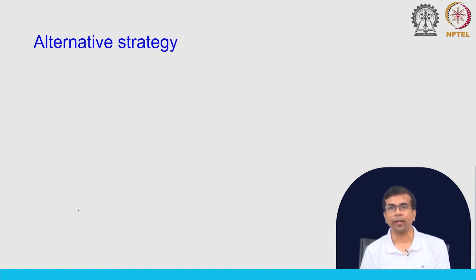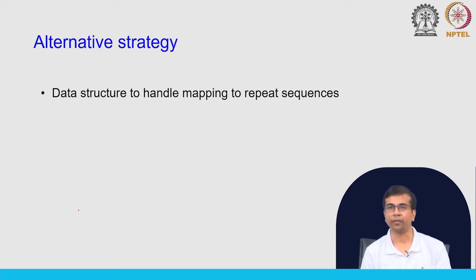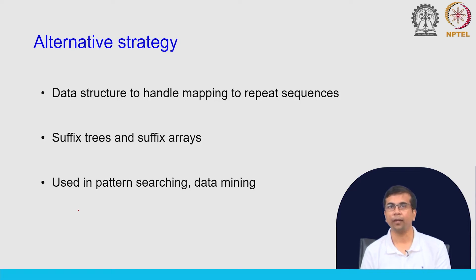Is there any alternative strategy? One of the things that researchers have come up with is a data structure that can handle mapping to repeat sequences — at least addressing the issue of mapping to repeat sequences. These structures are suffix trees and suffix arrays, and they have been used in pattern searching, data mining, etc., beforehand.